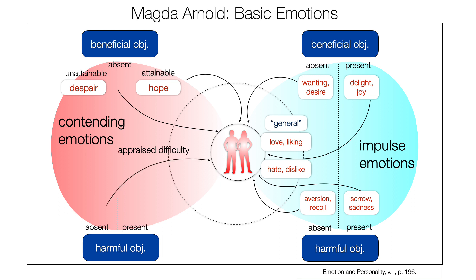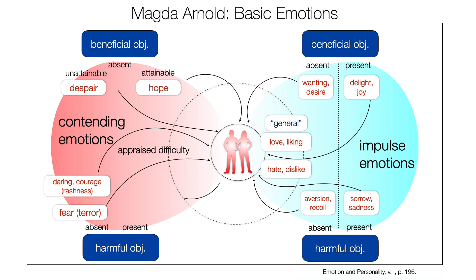When a harmful object is absent, we can develop fear or, in an extreme situation, terror — an interesting nuance Arnold introduces directly in the distinction of basic emotions. Or we can feel daring or courage, which can become brashness in an extreme way. When the harmful object is present, we have dejection or anger, and in extreme situations, desperation. These are important nuances, but again the very same map.